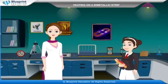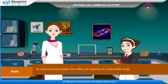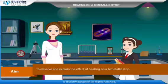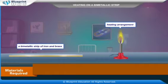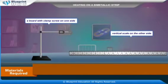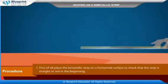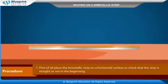Aim: to observe and explain the effect of heating on a bi-metallic strip. Materials required: a bi-metallic strip of iron and brass, a heating arrangement, a board with a clamp screw on one side, a vertical scale on the other side, and a thermometer.